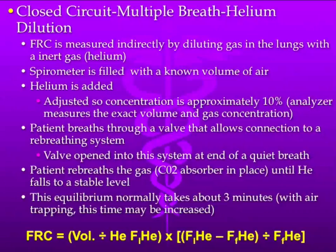When we talk about helium dilution, we're going to do what's called the closed circuit multiple breath helium dilution. It measures indirectly by diluting the gas with several breaths. Basically, you have a spirometer filled with a known volume of air, helium is added at a certain concentration — usually about 10% — and the patient breathes through a valve that allows some rebreathing. When helium reaches equilibrium, you can determine how much lung volume there is.